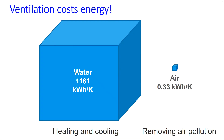The energy required to transport one cubic meter of air compared to one cubic meter of water, as presented in this figure, clearly shows how much cheaper it is to use water as the medium for heat transfer. To optimise energy use and IAQ, it is therefore recommended to use an HVAC system only for hygienic purposes — that is, removal of air pollution — and to use heating and cooling with water as the medium.